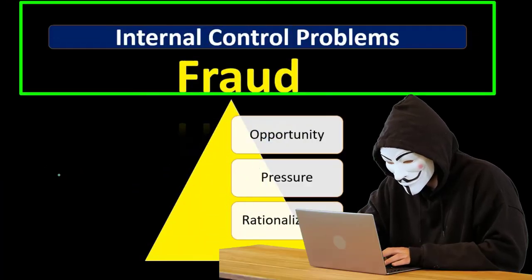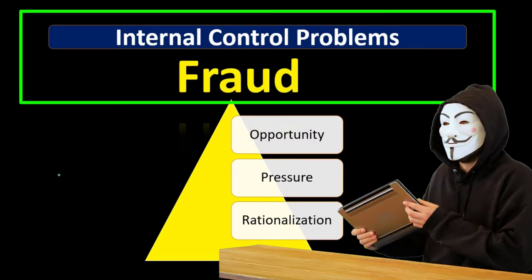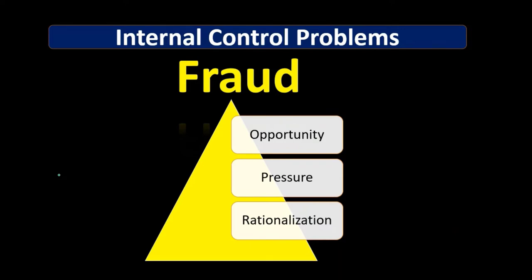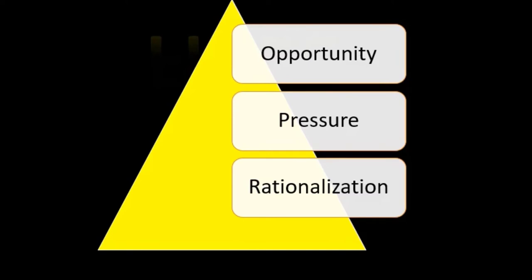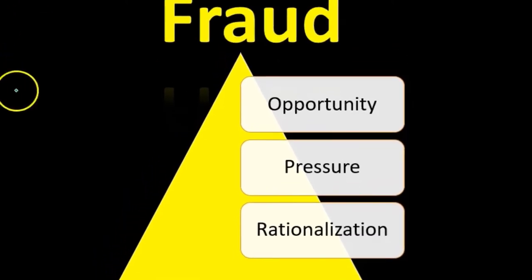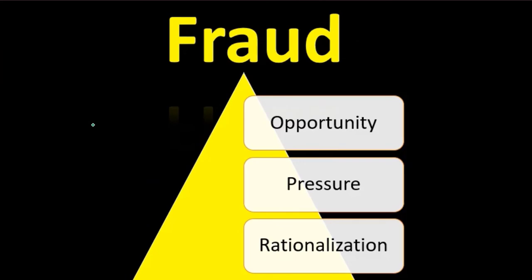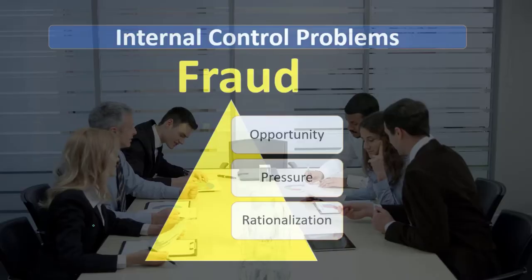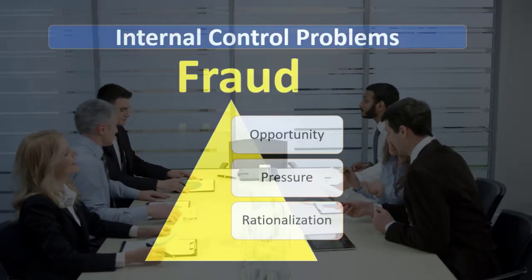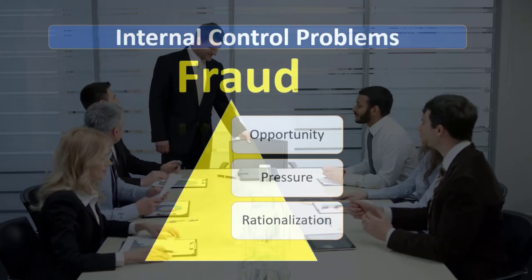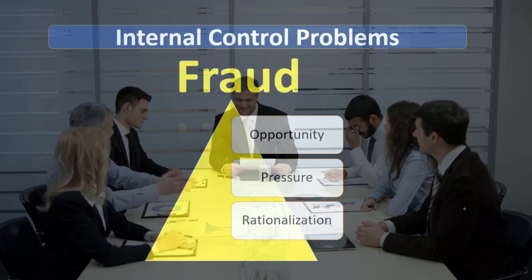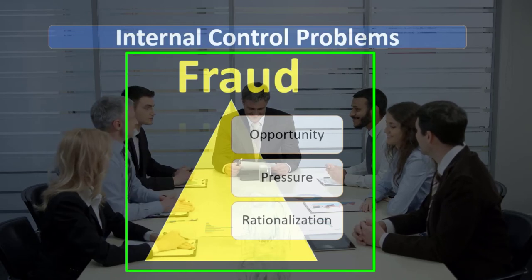There will always be problems with internal controls — there is no perfect internal control system that will totally eliminate the ability for fraud to happen. What we can do is lessen the likelihood of fraud. We might think better hiring reduces fraud, but there's a lot we can do within the system and company. To do that, we need to understand the components of fraud — what makes fraud happen or more likely. The components typically are opportunity, pressure, and rationalization.